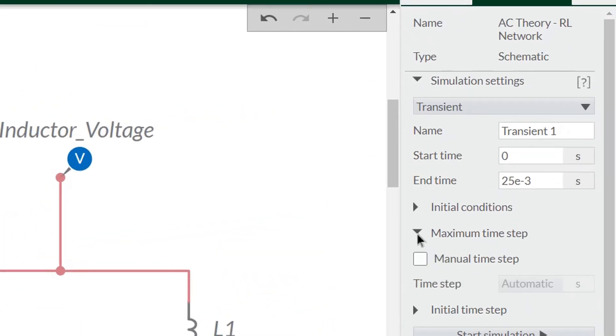To do this, under simulation settings change the maximum time step to manual and instead of having 100,000 calculations per second or 1 times 10 to the minus 5 between them, I will change it to 1 times 10 to the minus 7 so that there is 10 million calculations per second, so it will be easier to find a more accurate time difference to get a better phase difference.